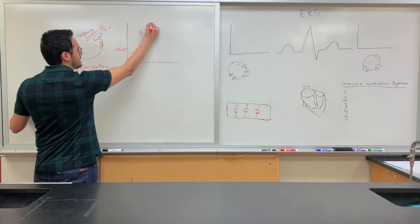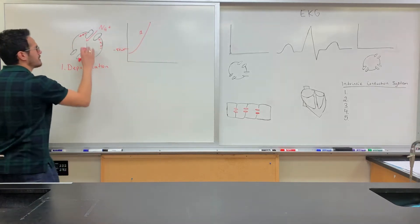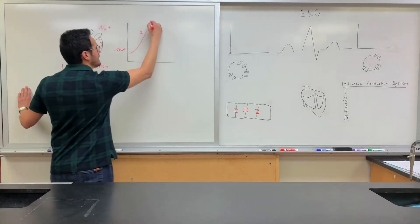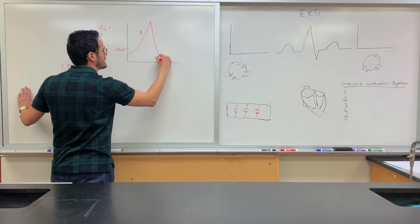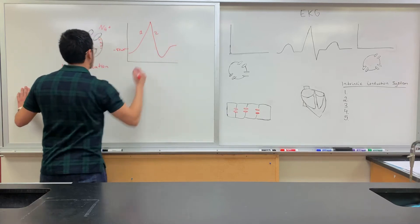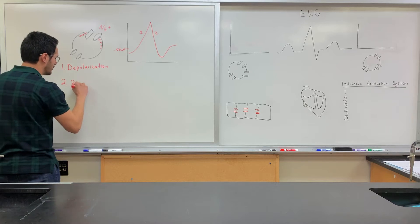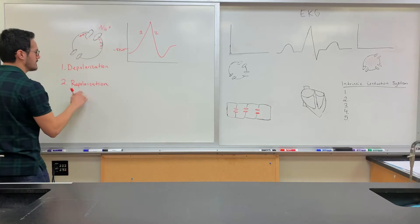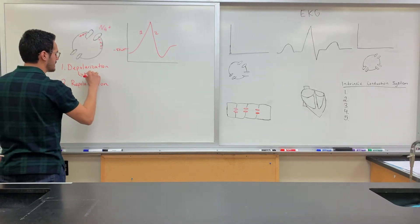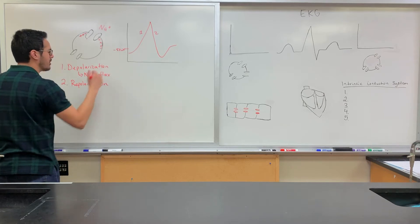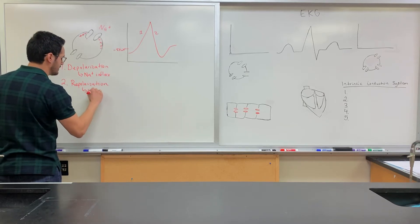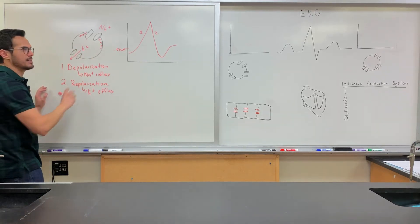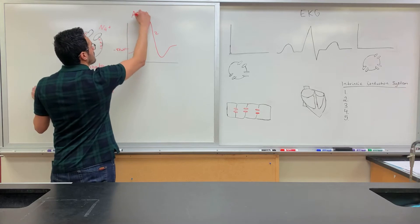Once it reaches its peak, the sodium channel will close, so no more sodium is going to flow in. As a result, it peaks and then starts to go down. Number two, we call this repolarization. Depolarization is due to sodium influx and repolarization is due to potassium efflux. Potassium in the cell is going to go outside. This is just a normal action potential.